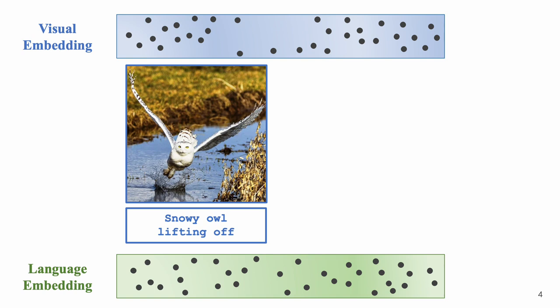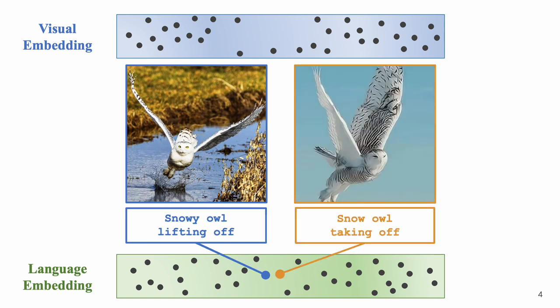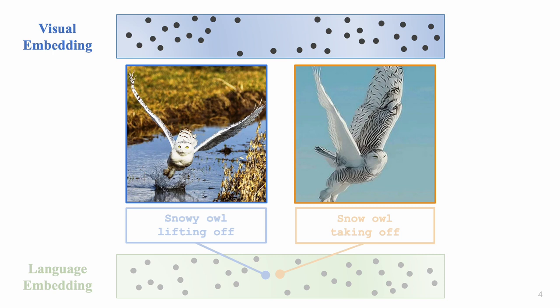We propose a simple approach for learning visual representations using language guidance. Given a dataset of captioned images, we use a pre-trained language model to embed their captions. We then find the nearest neighbor in language embedding space and retain the resulting image pair. Each image pair will be conceptually similar but visually dissimilar. Finally, we use those pairs for contrastive learning by training a model to maximize pairwise visual embedding similarity.